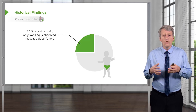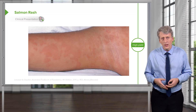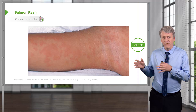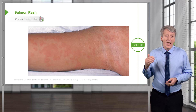Here is that salmon pink rash — the evanescent rash of systemic onset JIA. To be honest, I have not seen this rash in the patients I've seen with systemic JIA. It's not always present and doesn't always show up in any individual patient.